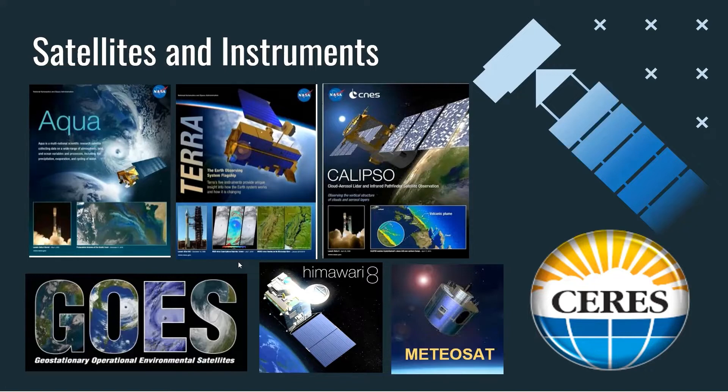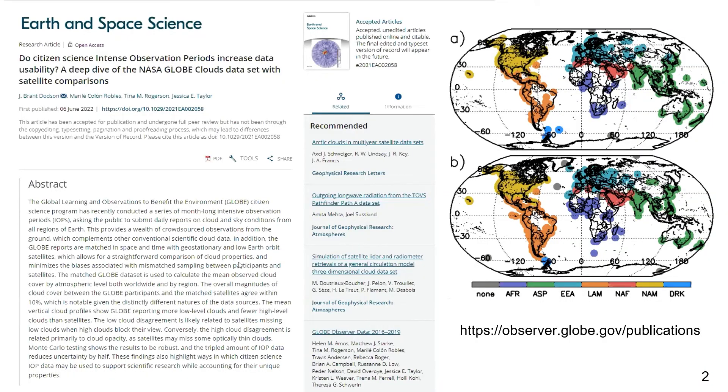With the data that we've collected from you — thank you so much — we just put out our most recent research paper. It looks at the differences and similarities between your ground observations and satellite data during some of those data challenges we've done in the past. Your observations actually match really well with satellite data. When the research team looked at total cloud cover all around the world and compared it to all those satellites, the results are within 10%. That is amazing.